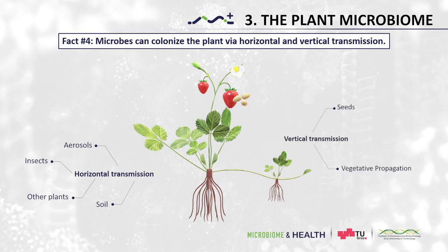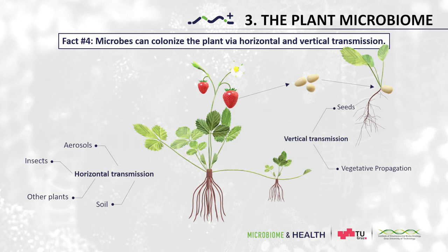Vertical transmission refers to the process when microbes are transferred from the parents to the next generation. This occurs either through seeds or through so-called vegetative propagation, which you know as runners from strawberry plants. However, not all microbes can colonize plant tissues, and even fewer are transmitted from the mother plant to the next generation — it is rather a highly selective process requiring specific adaptations of microbes.